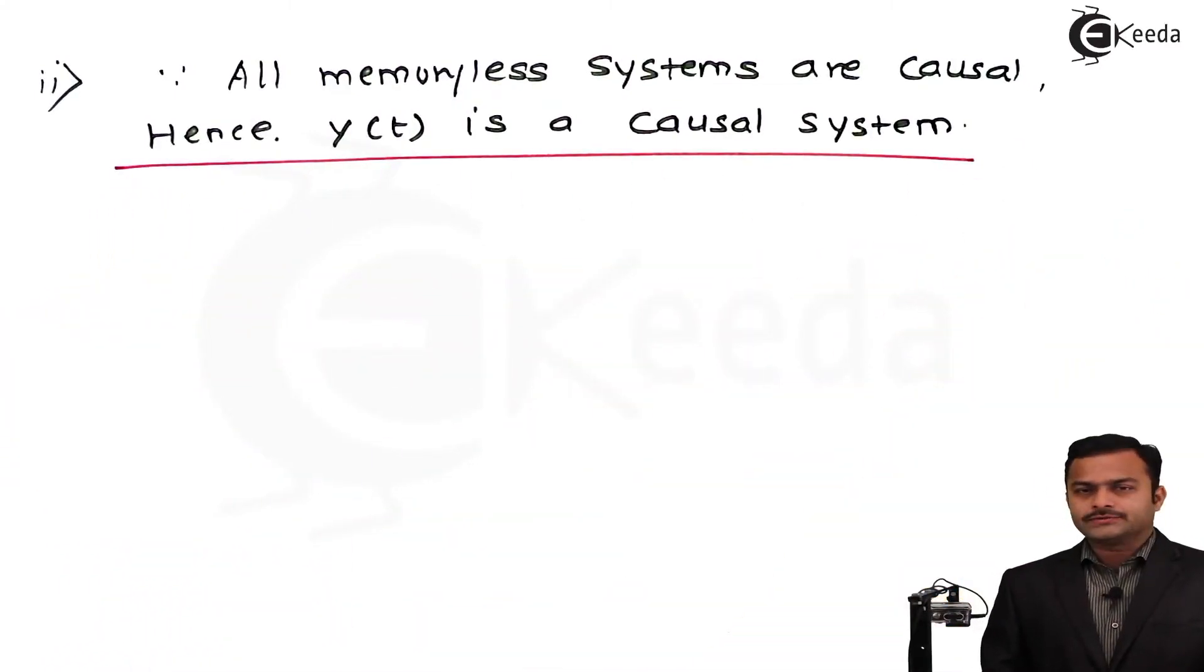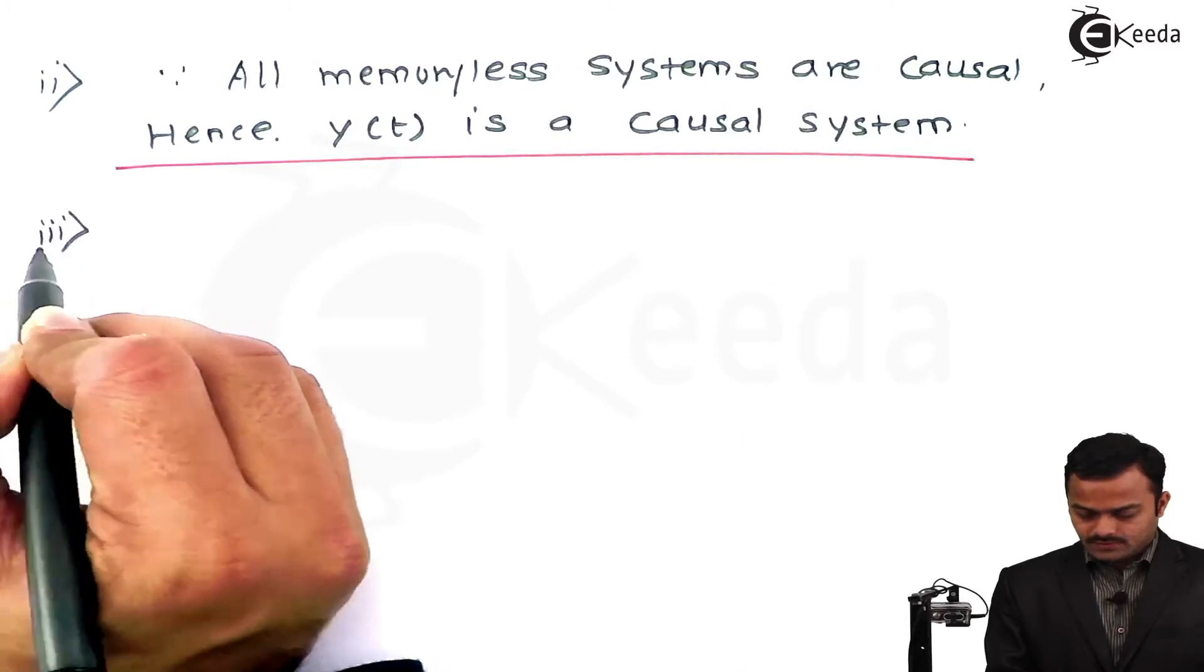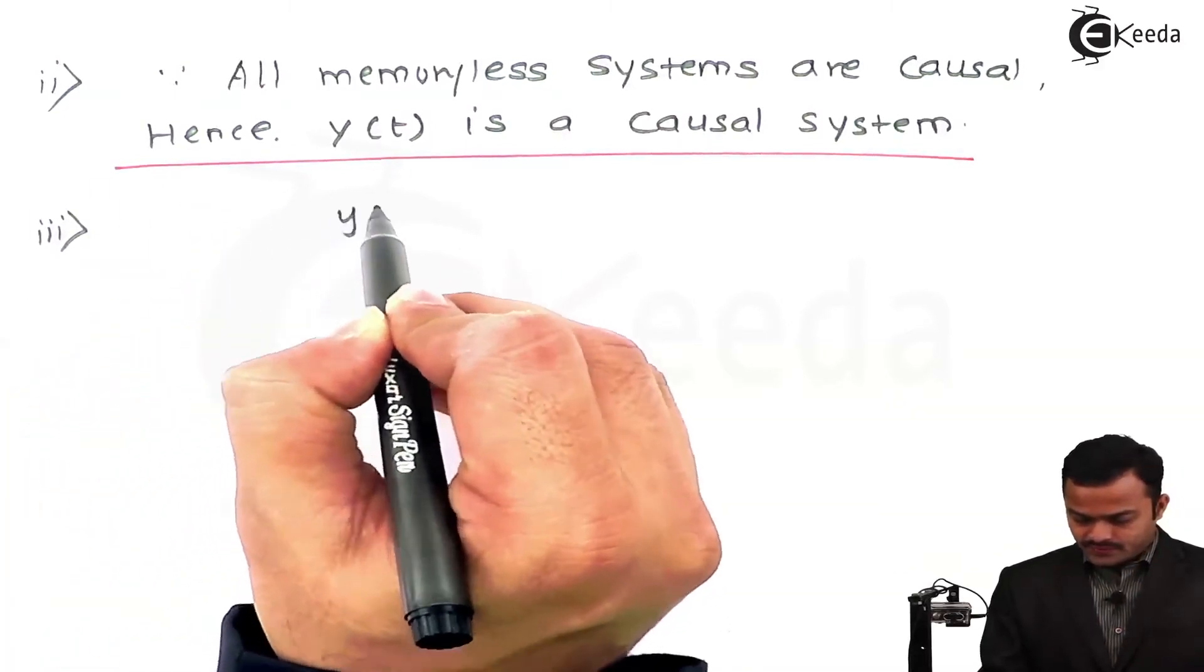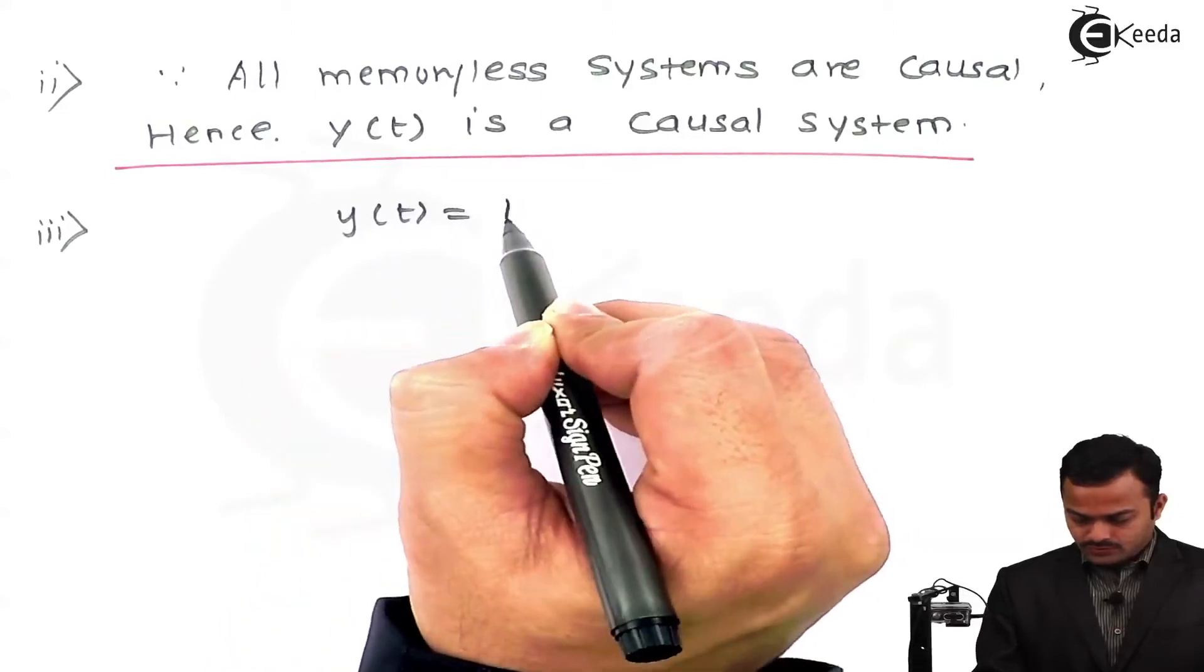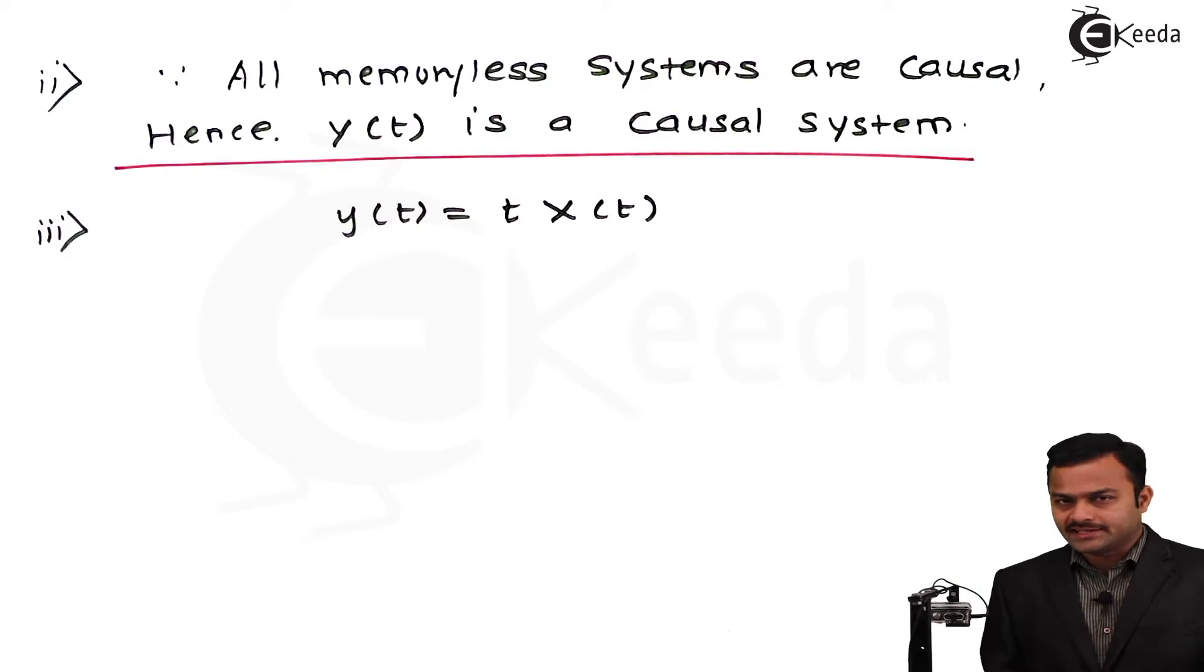So second criteria is also discussed. Let's go to third: linearity. Now, for linearity, we need to check whether this system is fulfilling homogeneity and superposition property or not. For that, we need to do a little exercise. System given is y(t) = t·x(t). Now let's check about the linearity.